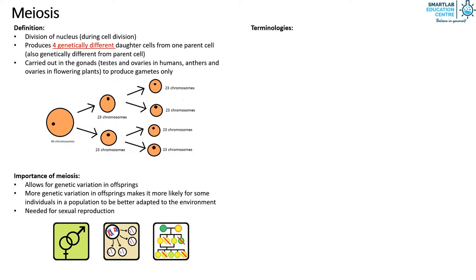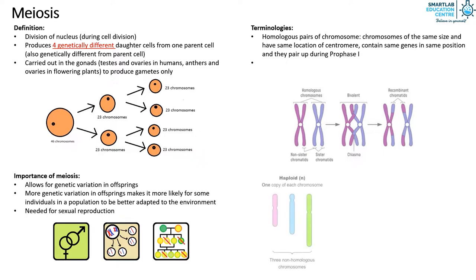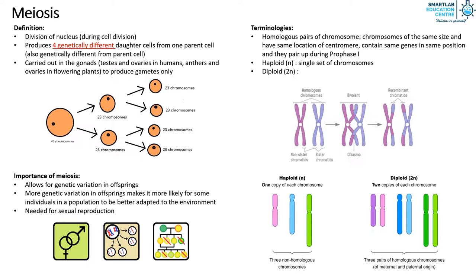Before we move into the stages of meiosis, we need to define some terminologies. Firstly, a homologous pair of chromosomes means that the chromosomes are of the same size, have the same location of the centromere, contain the same genes in the same position, and they pair up during prophase 1. Secondly, haploid means a single set of chromosomes. Lastly, diploid means two sets of chromosomes, one set from each parent.